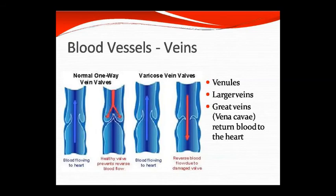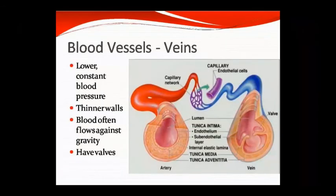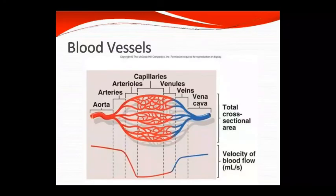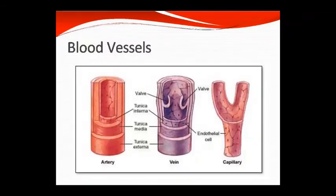Veins are divided into three parts: small venules, larger veins, and great veins, which return blood to the heart. Veins carry blood from the body back to the heart under low, constant blood pressure. Valves in veins help blood move against gravity. The diagram shows the difference in tunica media between arteries and veins — arteries are well-developed and strong, while veins have a thinner media. The layers — tunica media, tunica interna, and tunica externa — are shown along with endothelial cells.